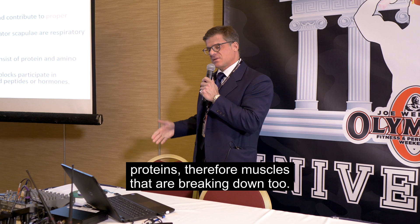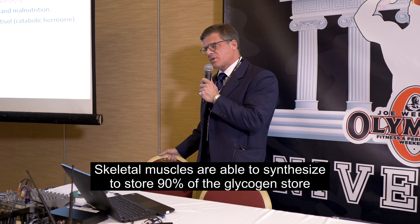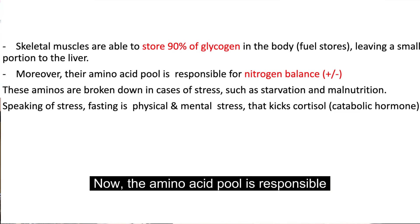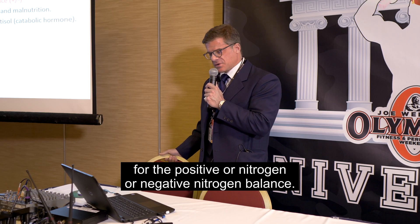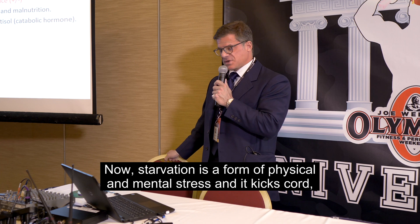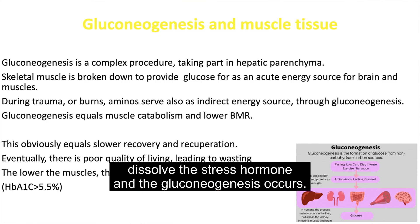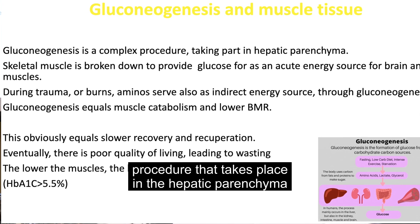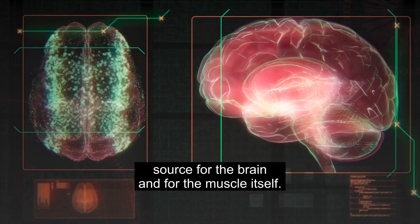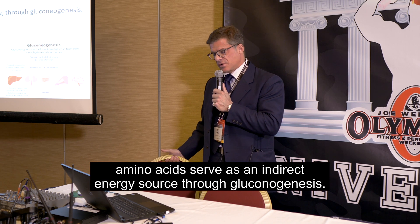Therefore, muscles that are breaking down — being made of proteins — are very important for immunity. Skeletal muscles are able to store 90% of the glycogen in the body, which is the main fuel storage, while a small percent is handled by the liver. The amino acid pool is responsible for the positive or negative nitrogen balance. These amino acids are broken down in cases of stress such as starvation and malnutrition. Starvation is a form of physical stress that triggers cortisol, the stress hormone, and gluconeogenesis occurs. Gluconeogenesis is a complex procedure that takes place in the hepatic parenchyma. The skeletal muscle is broken down to provide glucose as an acute energy source for the brain and the muscle itself. During trauma or burns, amino acids also serve as an indirect energy source through gluconeogenesis.